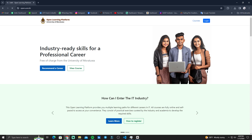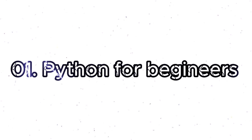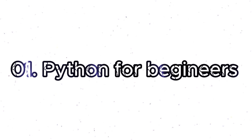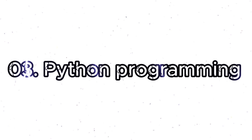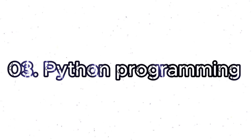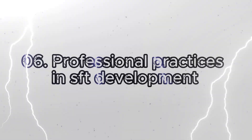In this course there are 3 lessons. The 1st section is Python for beginners — Python as a programming language. The 2nd section is Web Designing for beginners. The 3rd section is Python programming. The 4th section is front-end web development. The 5th section is server-side programming. The 6th section is professional practices in software development.